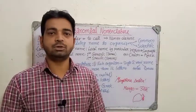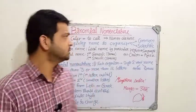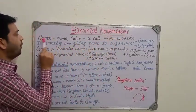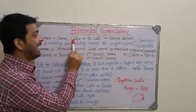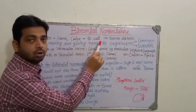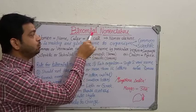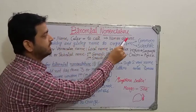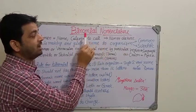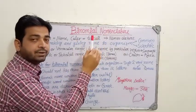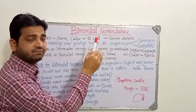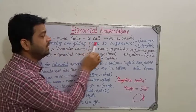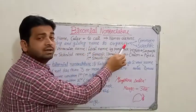Today we are going to discuss binomial nomenclature. Nomen means name and colare means to call, so when we are trying to call some organism by its name, it is called nomenclature. Binomial nomenclature means giving a particular name — it may be local or it may be scientific — to a living organism.